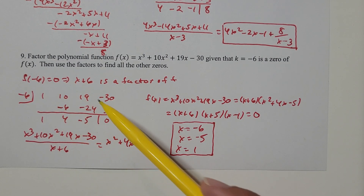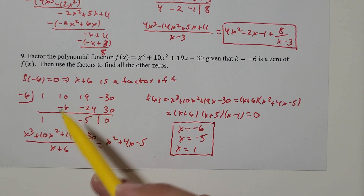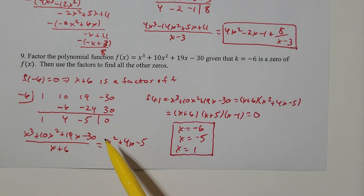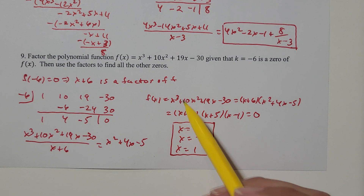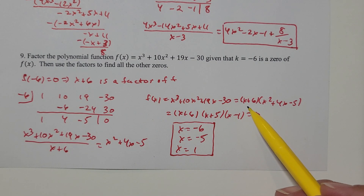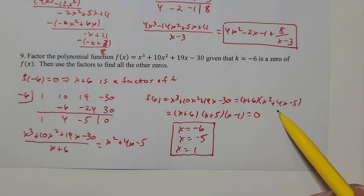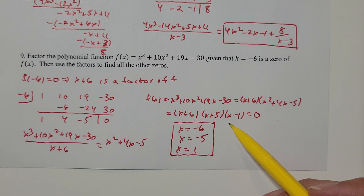Before I even divided, I could already know that the remainder is going to be zero. I'm more interested in what's to the left of zero. When we divide, we get x squared plus 4x minus 5. So f of x equals x plus 6 times x squared plus 4x minus 5. And x squared plus 4x minus 5 factors further as x plus 5 times x minus 1.